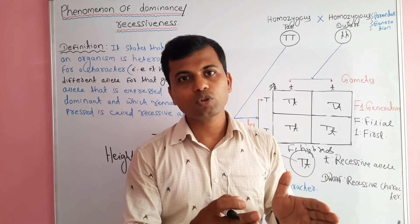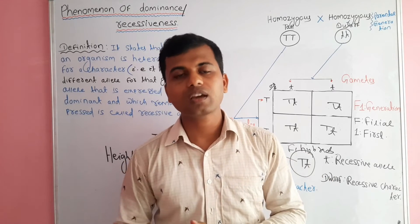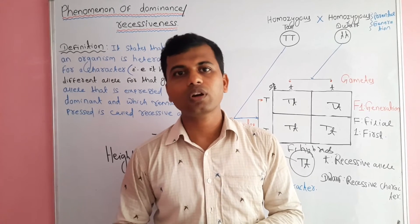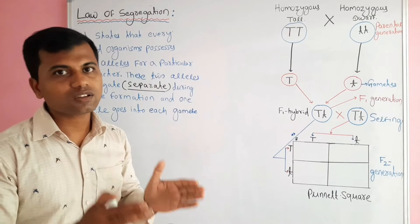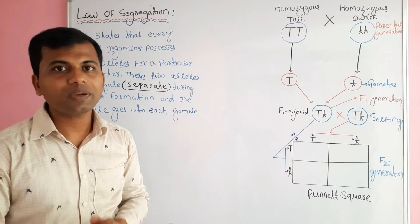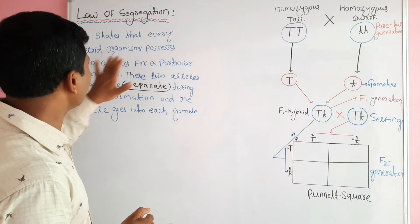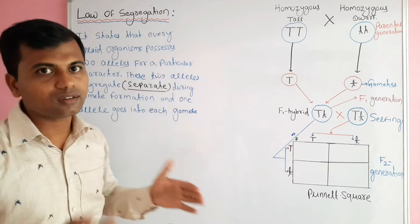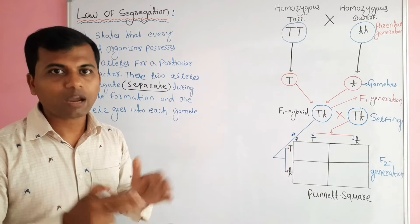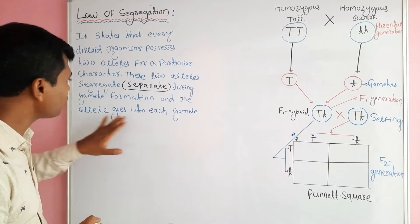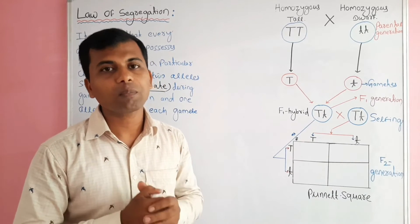The phenomenon of dominance and recessiveness has some limitations — incomplete dominance and co-dominance — and we will prepare a separate video to discuss those. Next comes the law of segregation, which is the first law of Mendel. Segregation means separation. The law of segregation states that every diploid organism possesses two alleles for a particular character. These two alleles segregate or separate from each other during gamete formation, and only one allele goes into each gamete. This law can be explained with a monohybrid cross using the character height.